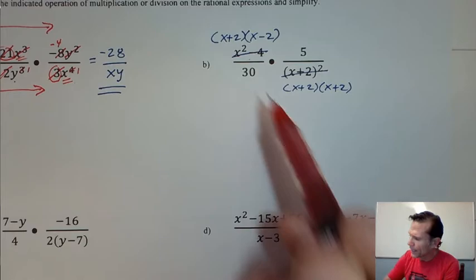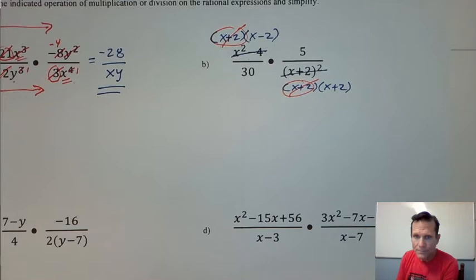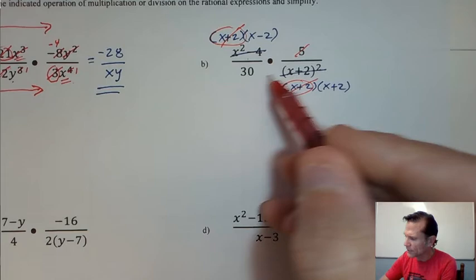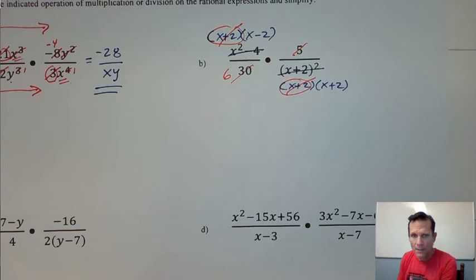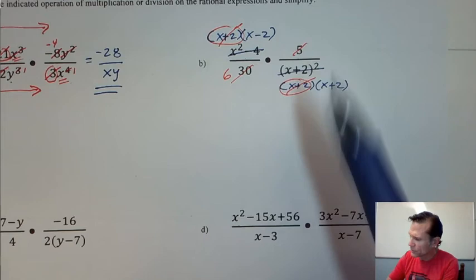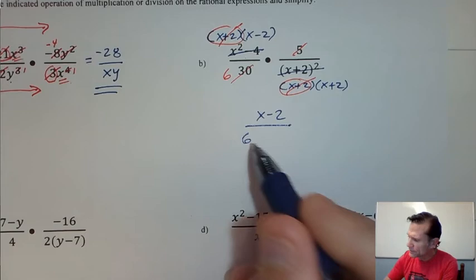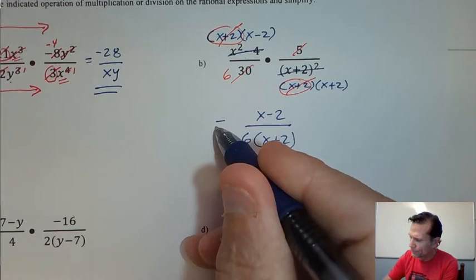Well, looking diagonal here, I got the x plus 2 and the x plus 2 can cancel. That's it. Now I'm going to look diagonally at the 5 and the 30. The 5 will cancel out and knock the 30 down to 6 by dividing by 5. And so what do I have left over? Well, let's look. The numerator, just x minus 2. The denominator, I have a 6 and x plus 2. That's a fine answer.